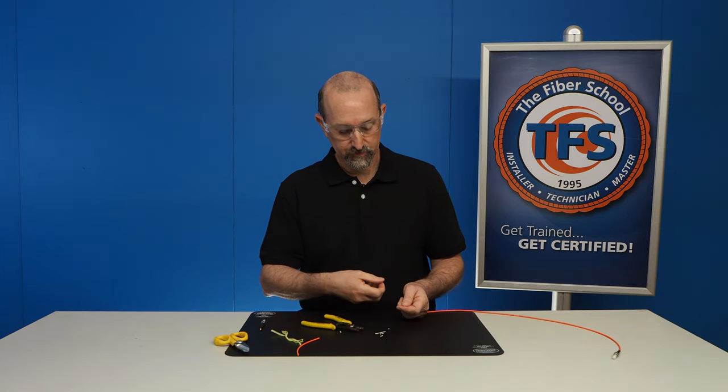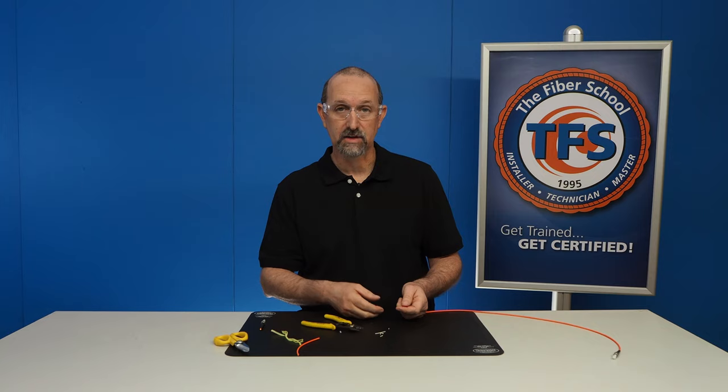And now we're ready to cleave. So I would have to clean off with alcohol and a lint-free wipe and then I would cleave. But this shows you how to use the three hole stripper. Thank you.